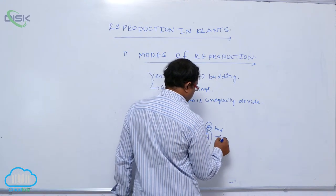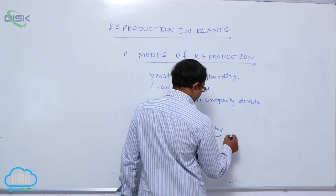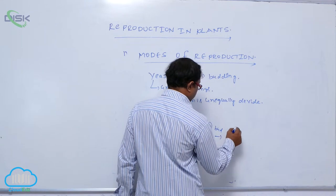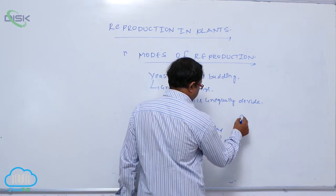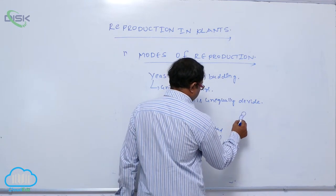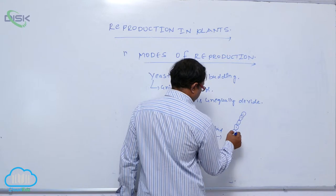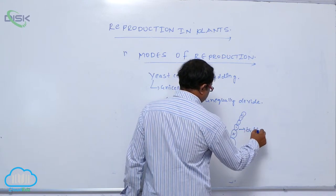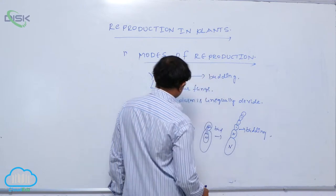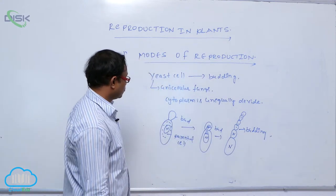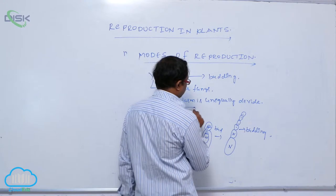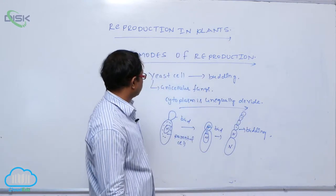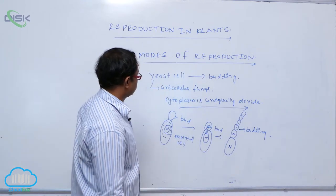After that, a small bud is formed with a nucleus. They are attached in a chain-like structure. This process is known as the budding process, and it appears in yeast cell. The cytoplasm is unequally divided — that is an important point about yeast cell.